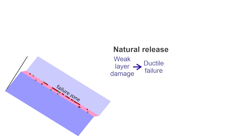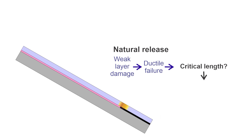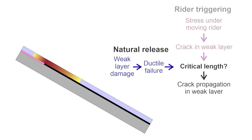If the deformation rate is not sustained, the ductile failure will heal — that is, new bonds will form faster than bonds are breaking. The life of a ductile failure zone is not well understood, but perhaps a few hours for a persistent weak layer, and much less, perhaps a few minutes for a non-persistent weak layer. However, if the failure zone reaches a critical length, called the critical crack length, the crack will accelerate and propagate, which is the same as for rider triggering.